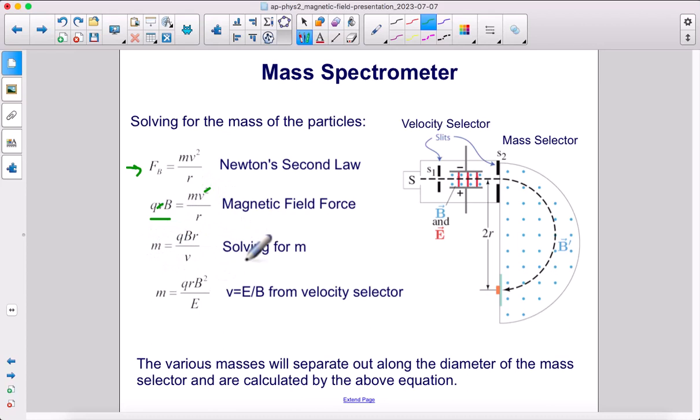And we previously solved for v from the velocity selector. Remember, v had to be equal to E over B if it were to make it to this point at all. So therefore, instead of v, we can put in E over B. When you put in E over B, it puts E into the denominator and then B into the numerator. This is some algebra. That becomes B squared up in the numerator.